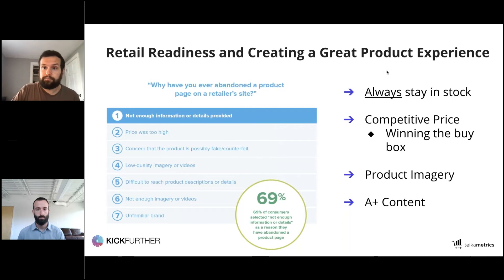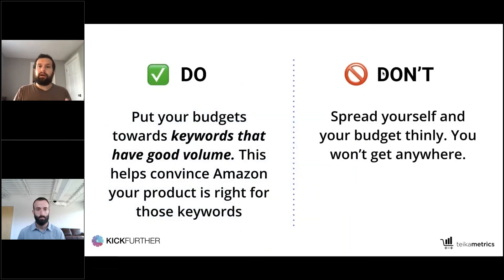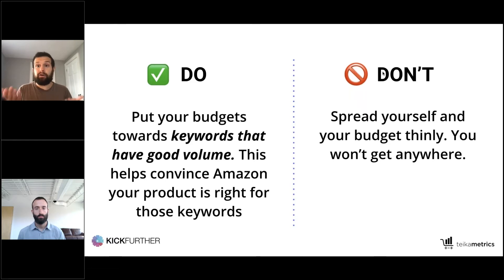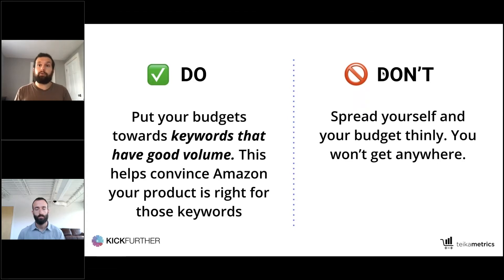When advertising, put your budgets toward keywords with strong volume. This signals to Amazon that your product converts at high rates, helping it rank higher organically. Don't spread budget across thousands of loosely relevant terms — that dilutes your signal. The goal is to push hard early, let that progress build organic rank, and then over time pull back advertising as you rise — perhaps to position three or four organically — becoming more selective about where you place your dollars.